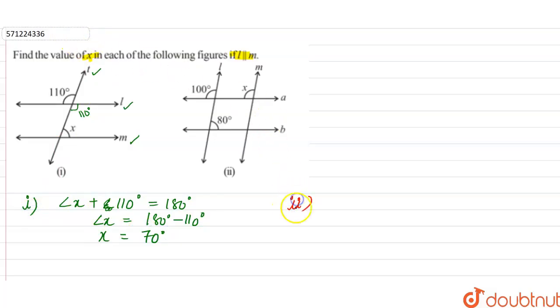Now in part B of the question, this is line L, which is parallel to line M, and A is the transversal. So 100 degrees and x degrees are corresponding angles, and corresponding angles are equal. Therefore, x will be equal to 100 degrees.